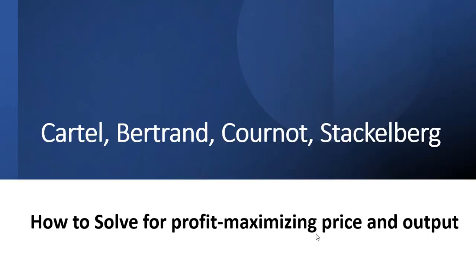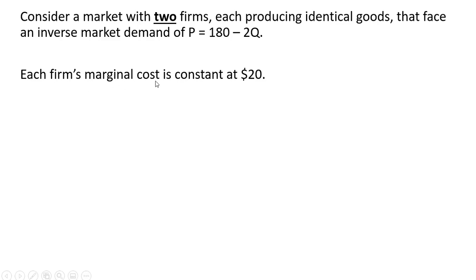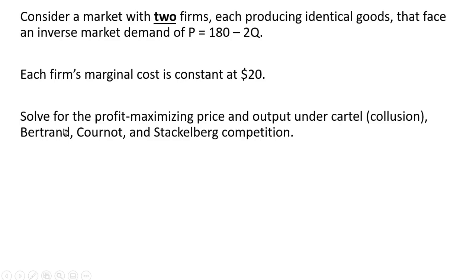In this video we're going to solve for the profit-maximizing price and output level under Cartel, Bertrand, Cournot, and Stackelberg competition. Consider a market with two firms, each producing identical goods, that face an inverse market demand of P = 180 - 2Q, where Q is industry output. Each firm's marginal cost is constant at $20. We're going to solve for the profit-maximizing price and output under these various market structures: Cartel (the collusion outcome), Bertrand, Cournot, and Stackelberg.